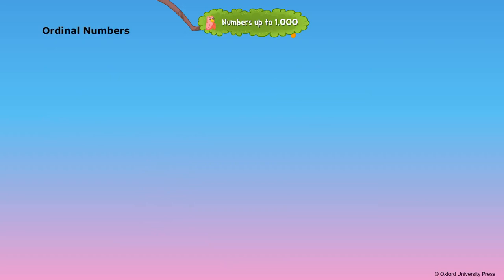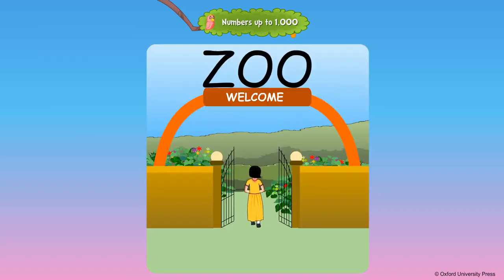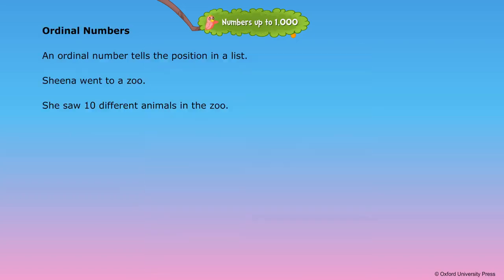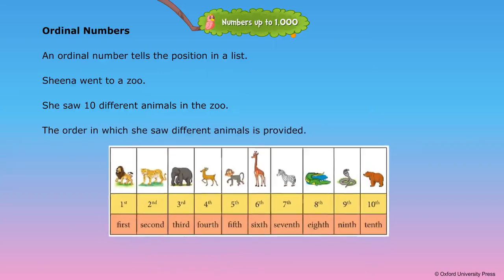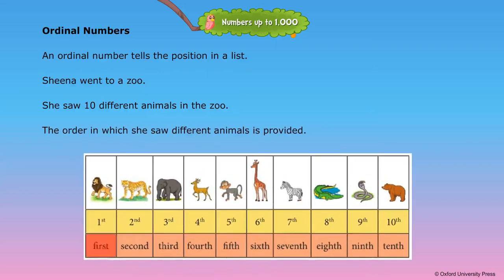Ordinal numbers: an ordinal number tells the position in a list. She went to a zoo and saw ten different animals. The order in which she saw different animals is: first, second, third, fourth, fifth, sixth, seventh, eighth, ninth, tenth.